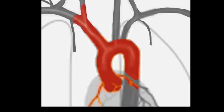Its first branch is the internal thoracic, sometimes known as the internal mammary artery, and then it carries on before giving off the vertebral artery and the thyrocervical trunk before carrying on as the brachial artery.